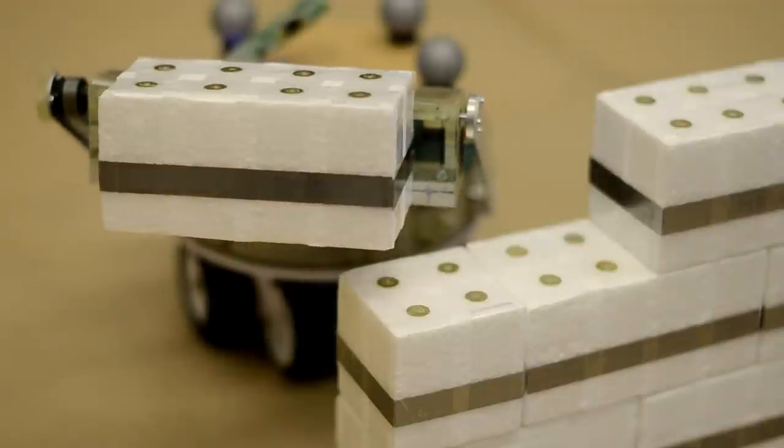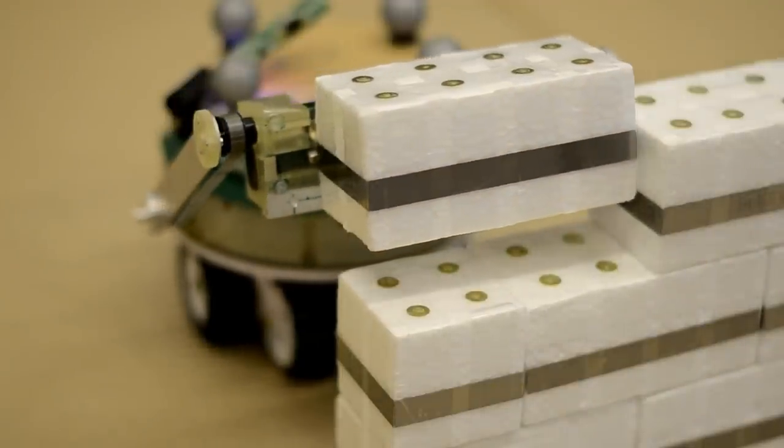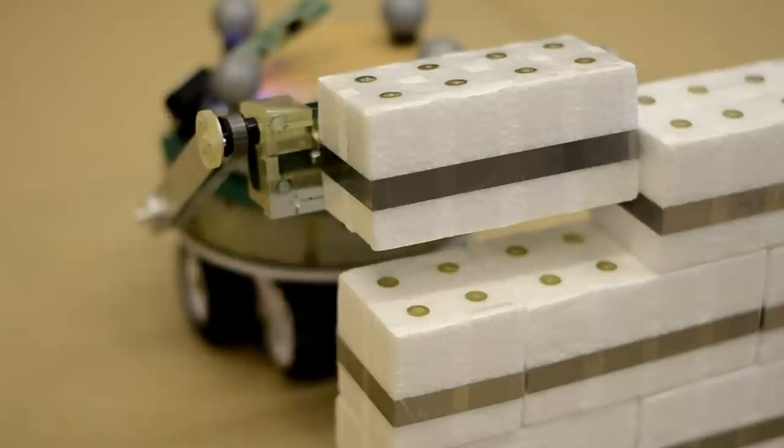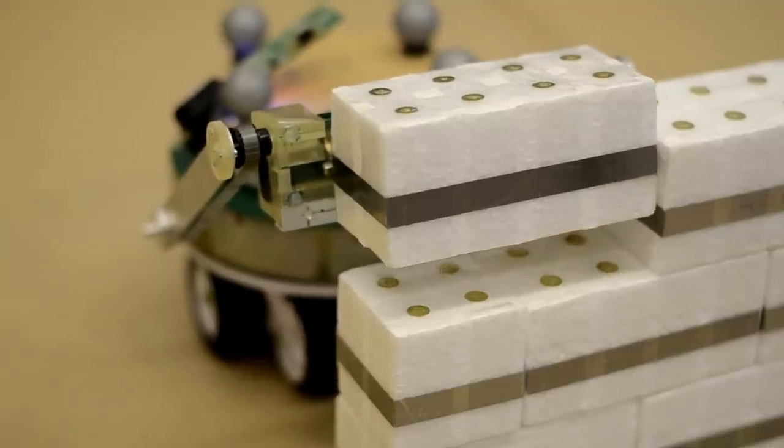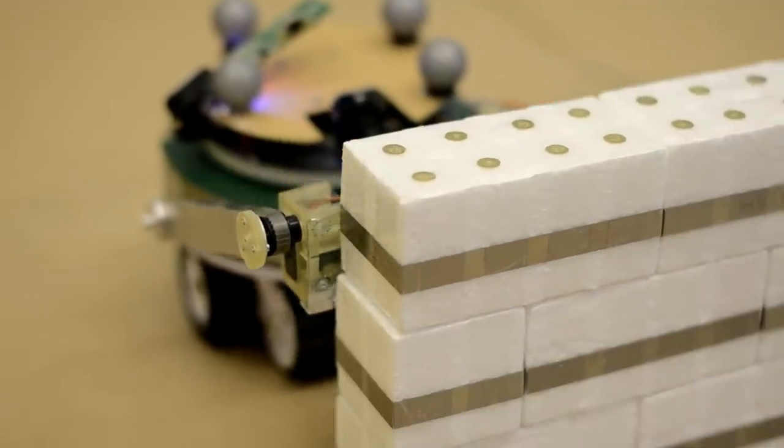The robot builds the three layers of a wall from left to right, relying on two different building behaviors. The first block of a layer is aligned with the left end of the wall and the other blocks are appended to its right.